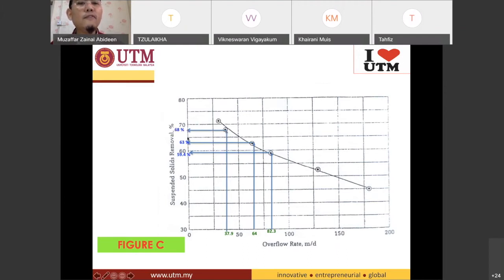We are interested with 65. 65 is there. Go down the line. We'll obtain our V-naught to be 50 meter per day.